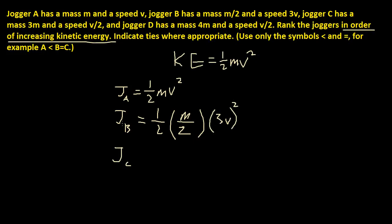Jogger C. Jogger C has a speed 3m. So 1 half times 3m. Because it's mv. So mv. V over 2 squared. V over 2 squared.